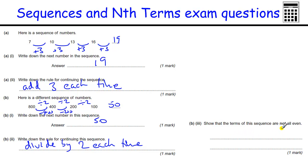Show that the terms of the sequence are not all even. Well, all the ones so far are even. So if we carry it on, half of 50 is 25. And because 25 ends in 5, that's not even. So next term is 25, which is not even, but odd.